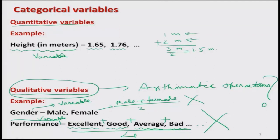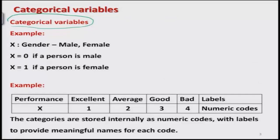So the difference is: for quantitative variables, we can do all sorts of mathematical manipulations, whereas for qualitative variables, we cannot directly do mathematical manipulations. But qualitative variables still make sense — they have certain meaning and certain interpretations. The question is: how should we handle them? One option is to use categorical variables. Our objective is to understand what a categorical variable is.